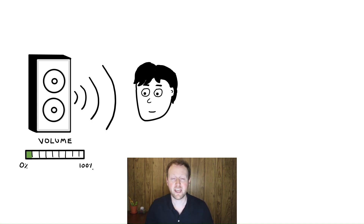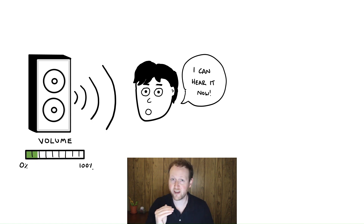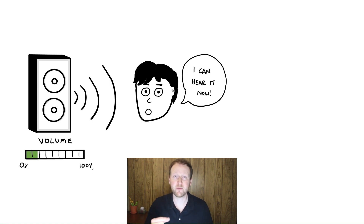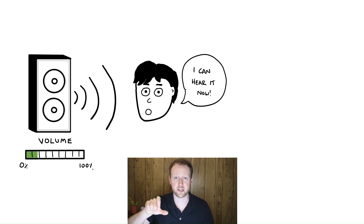Naturally, you keep increasing the volume until that point at which you first are able to detect the sound. It probably won't be as loud as you are planning for it to be, but you increase the volume slowly until that exact point where you can now say — even though it's faint — I can now hear the music, or I can now hear the person speaking in the video. You've just reached what we call the absolute threshold. We define the absolute threshold as the minimum amount, or minimum intensity, of a stimulus — in this case the volume — required to detect that stimulus.